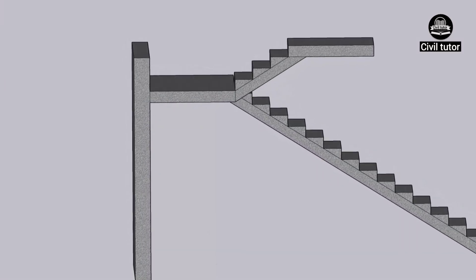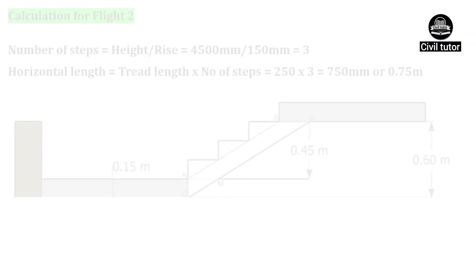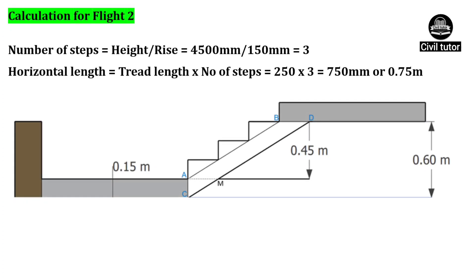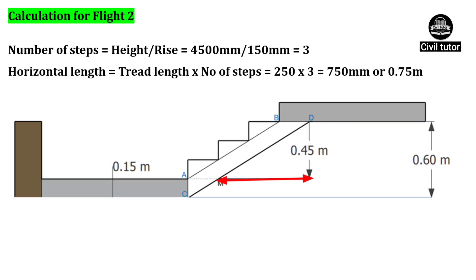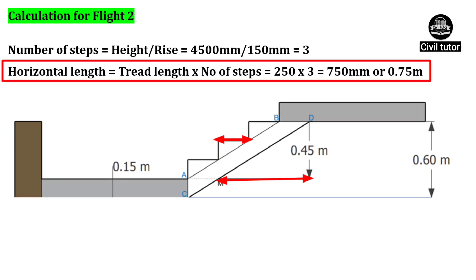Now we need to do the calculations for flight 2. The first step will be to calculate the number of steps, which will be equal to height of flight divided by rise. Height of flight 2 is 4500 mm and rise is equal to 150 mm, so the number of steps will be equal to 3. This horizontal length will be equal to tread length multiplied by number of steps. The tread length is 250 mm and number of steps equals 3, so the horizontal length will be equal to 0.75 meter or 750 mm.